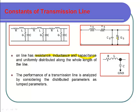When going to analyze a parameter, for making the analysis simpler we assume some parameters can be neglected. For example, comparing the leakage currents to the transmission line current, the leakage currents are so small that we neglect the conductance from the transmission line network.